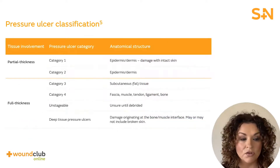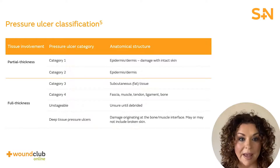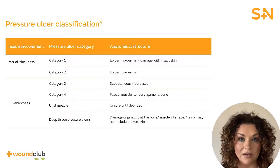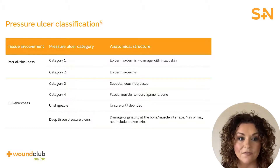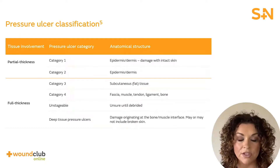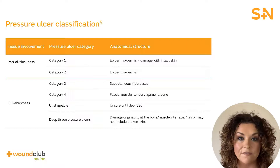Most wounds such as burns, traumatic injuries, arterial and venous ulcers are described as partial thickness or full thickness depending upon the tissues involved. Partial thickness wounds involve the epidermis and the dermis. Full thickness wounds involve the subcutaneous fat, fascia, muscles and or bone. Neuropathic or diabetic foot ulcers have a separate classification system which include partial and full thickness in the descriptions. In this table, you can see that category 1 and 2 pressure ulcers represent partial thickness tissue damage whereas category 3, 4, unstageable and deep tissue injuries or DTIs represent full thickness tissue damage.